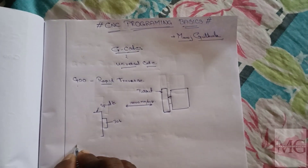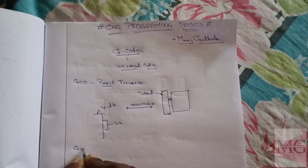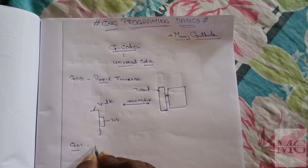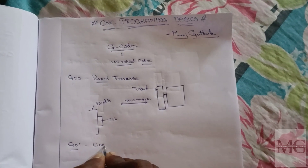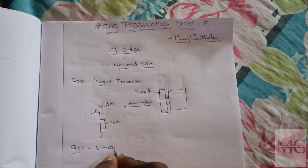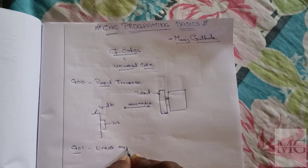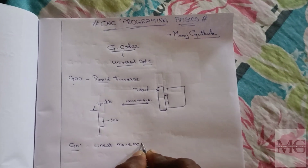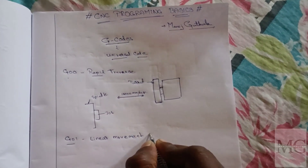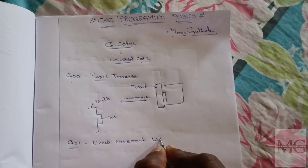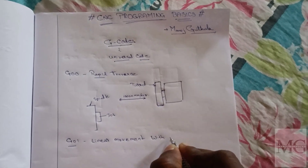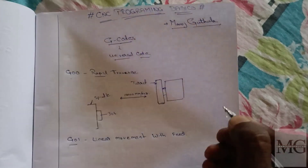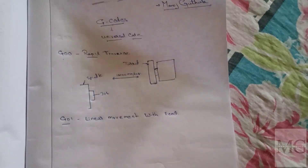G01 is a linear interpolation with feed. This is a linear movement with feed rate applied.